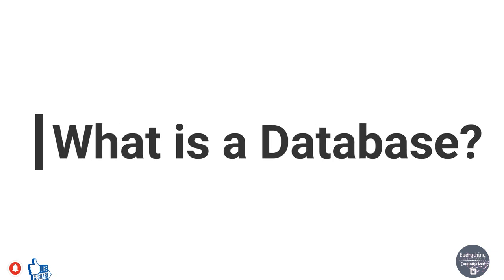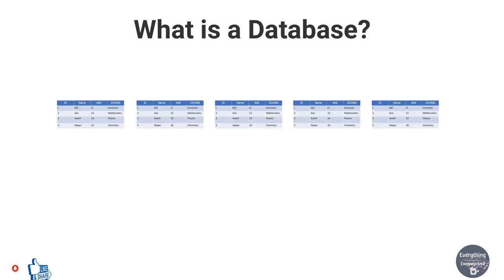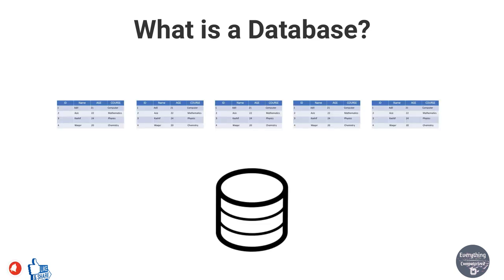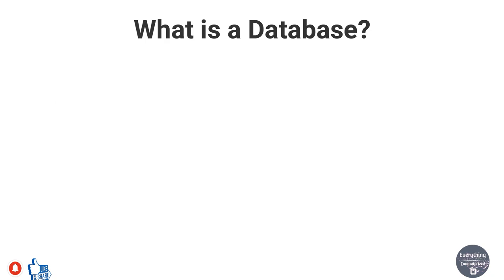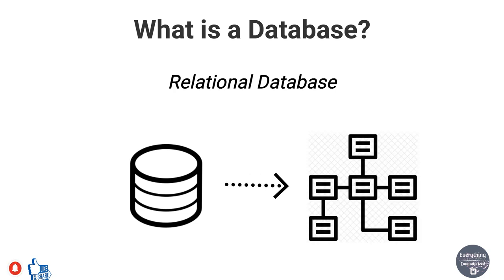Now let's understand what databases are. Simply, a database is a collection of multiple tables in a single container. We also have a type of database known as a relational database. When a database contains multiple tables which are related to each other in a specific manner, that database is known as a relational database.